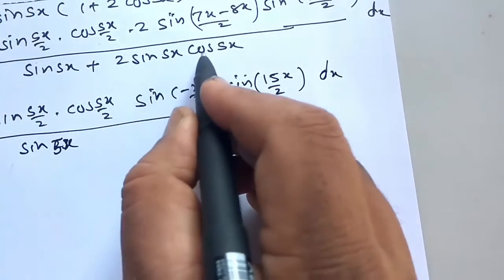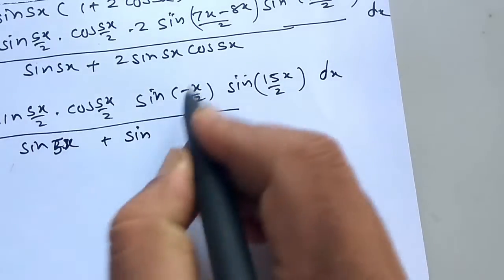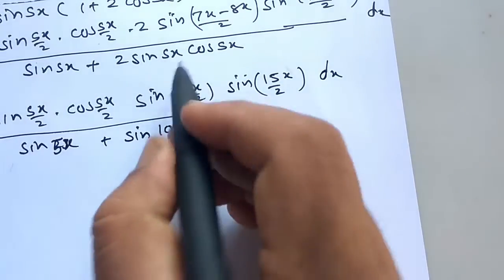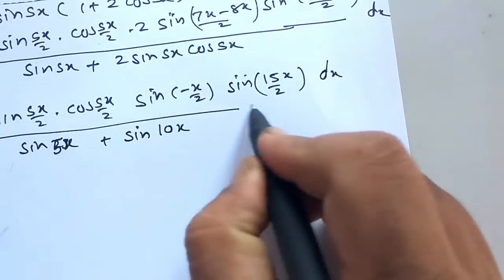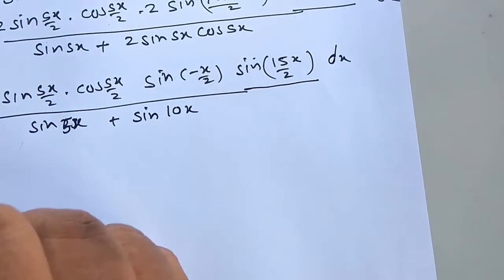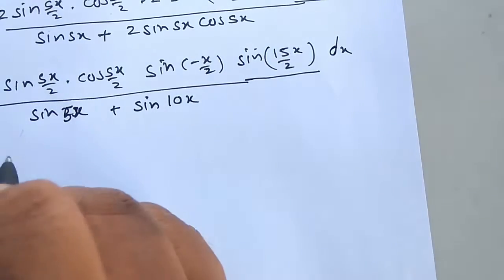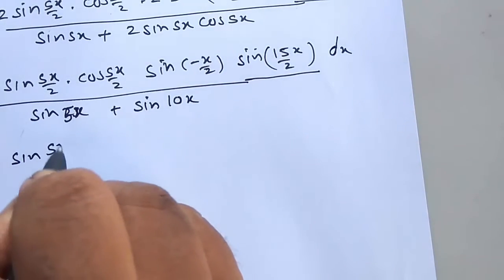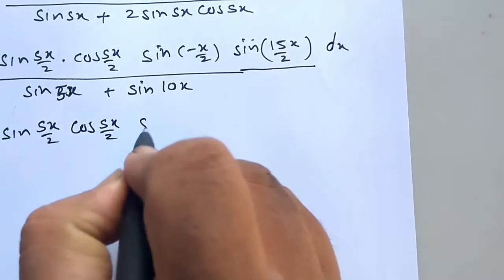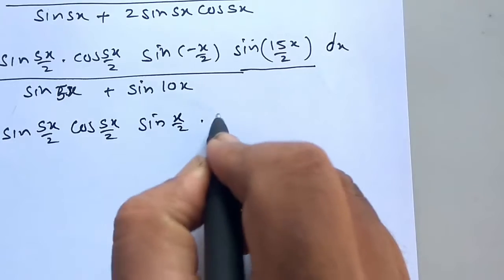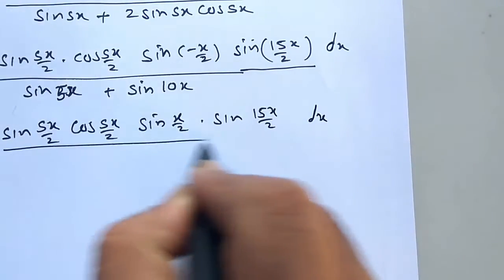Sin of 5x plus 2 times sin 5x into cos 5x — by the half angle formula it becomes sin of 10x. Sin of 2 sin theta into cos theta equals sin of 2 theta, so this equals 4. Sin of minus theta becomes minus, so it is minus 4 sin(5x/2) cos(5x/2) into sin(x/2) into sin(15x/2) dx divided by sin of 5x.